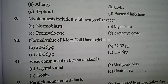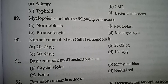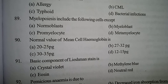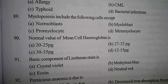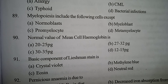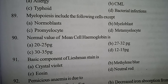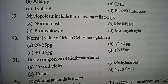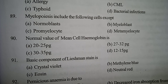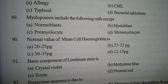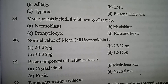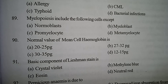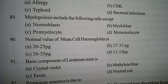Next one: what is the normal value of mean cell hemoglobin (MCH)? Option A: 20 to 25 picogram. Option B: 27 to 32 picogram. Option C: 30 to 35 picogram. Option D: 12 to 15 picogram. Correct answer: Option B, 27 to 32 picogram.